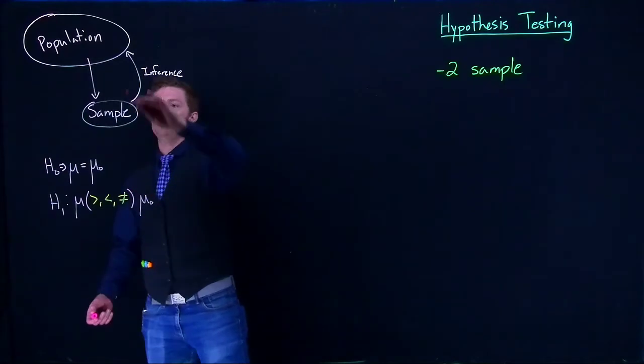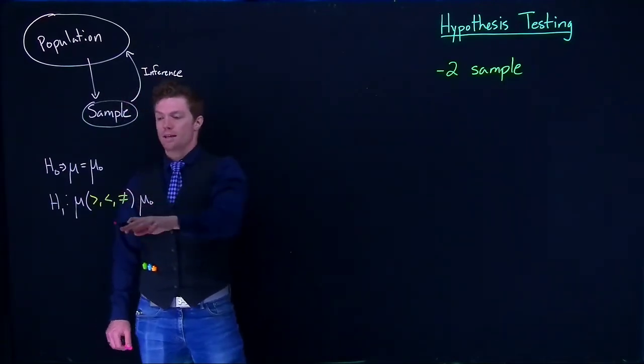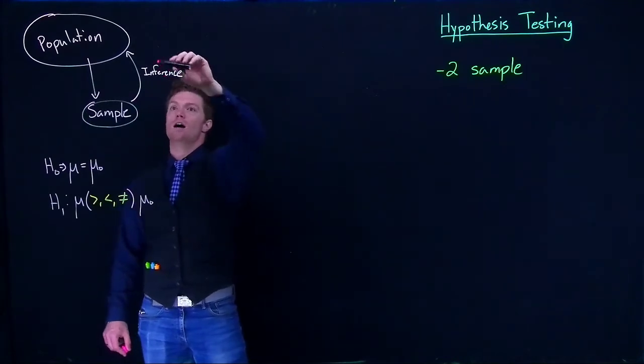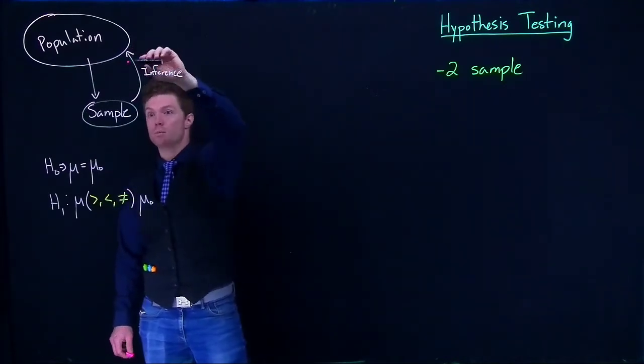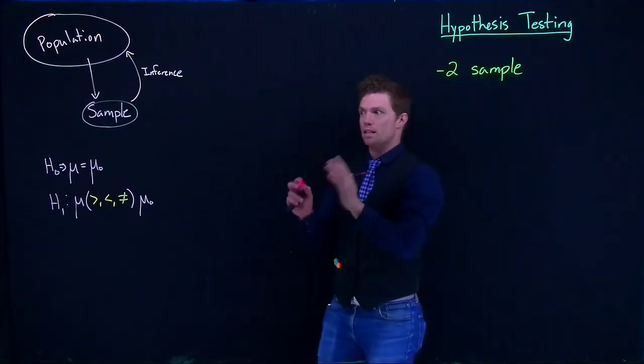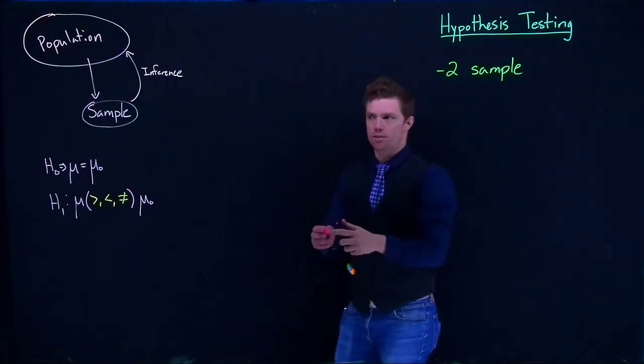When we've done this, we took a sample, collected data, did statistical testing, calculated a confidence interval, and made inferences about the population. That's what we've done with one-sample testing.